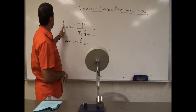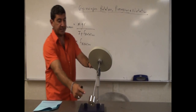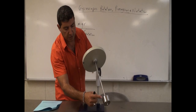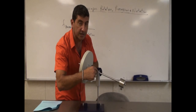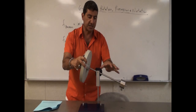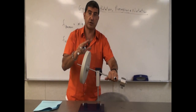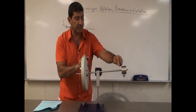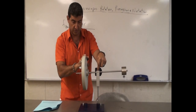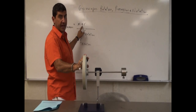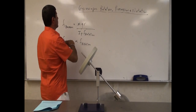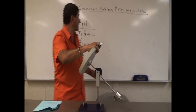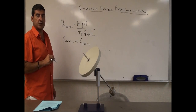This equation tells us the precessional frequency depends on the mass m, times gravity, times r — where r is the distance between the mass and the axis of rotation. In other words, this mass is causing a torque on the system. The torque is equal to mass times gravity times its distance from the pivot point. The heavier that mass is, and the further out I put it, that's going to increase the precessional frequency.